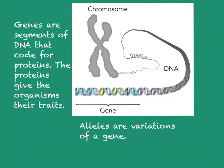On these chromosomes, on the DNA, you have segments that code for proteins, and these segments are called genes. It is the proteins that give organisms their traits. So if you have yellow seeds in a pea plant, that's because there is a protein that makes that seed yellow, and if you have green seeds, there's a protein that makes that seed green.